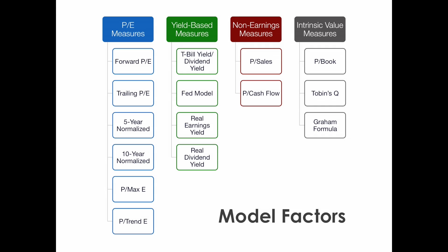Finally, the last category we call intrinsic value measures, though it's more of a residual category. We actually added a factor there in the last year: the ratio of corporate profits to GDP, which is a commonly used proxy for profit margin.